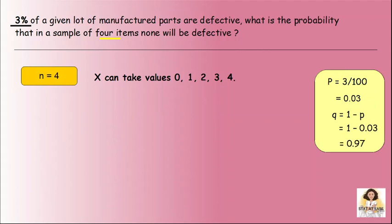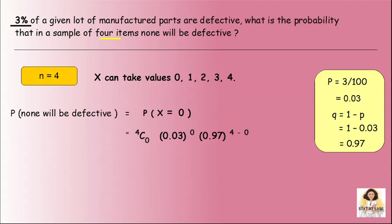We want the probability that none will be defective, so X equal to 0. P(X = 0) equals 4C0 times 0.03 raise to 0 times 0.97 raise to 4 minus 0. 4C0 is 1 and 0.03 raise to 0 is 1, so this becomes 0.97 raise to 4, which equals 0.885.